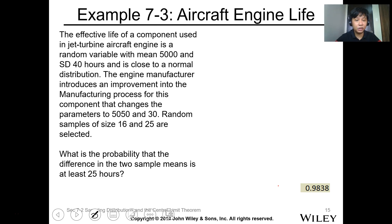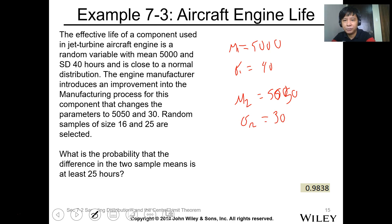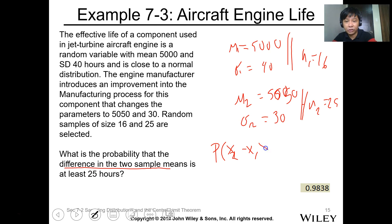What is the probability that the difference in the two sample means is at least 25 hours? We have: mu1 equals 5,000, sigma1 equals 40; mu2 equals 5,050, sigma2 equals 30. From population 1 we get sample size n1 equals 16, and from population 2 we get sample size n2 equals 25. We are finding the probability that x1-bar minus x2-bar, or x2-bar minus x1-bar, is at least 25 hours.